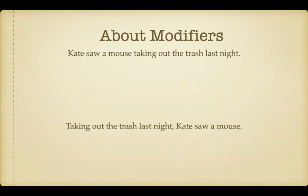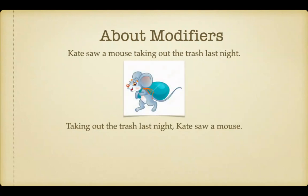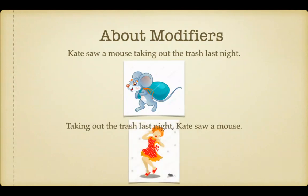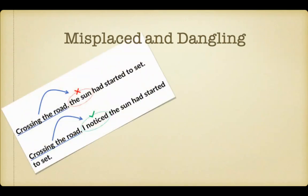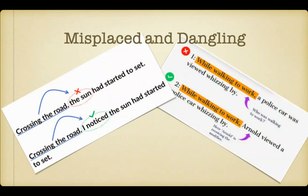Which meaning is correct? Well, most likely, Kate did not see a mouse taking out a tiny mouse-sized bag of trash. By placing the modifier as close to the name Kate as possible, you can ensure that your audience understands exactly what you're trying to say. This lesson will help you to correct two types of incorrect modifiers: misplaced modifiers and dangling modifiers.